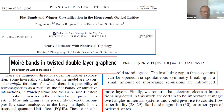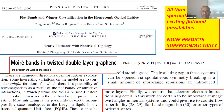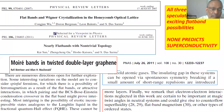The famous paper by Bistritzer and McDonald on moiré bands in twisted bilayer graphene says in its last sentence: 'electron-electron interactions neglected in this work are certain to be important at magic twist angles in neutral systems and could give rise to counterflow superfluidity, flat band magnetism, and other types of order.' The common feature of all these papers is they imagine interesting symmetry breakings and exotic phases, but none of them predict superconductivity. When you create a flat band with electron-electron interaction, you expect magnetism, Mott insulator, Wigner crystallization — but not superconductivity.